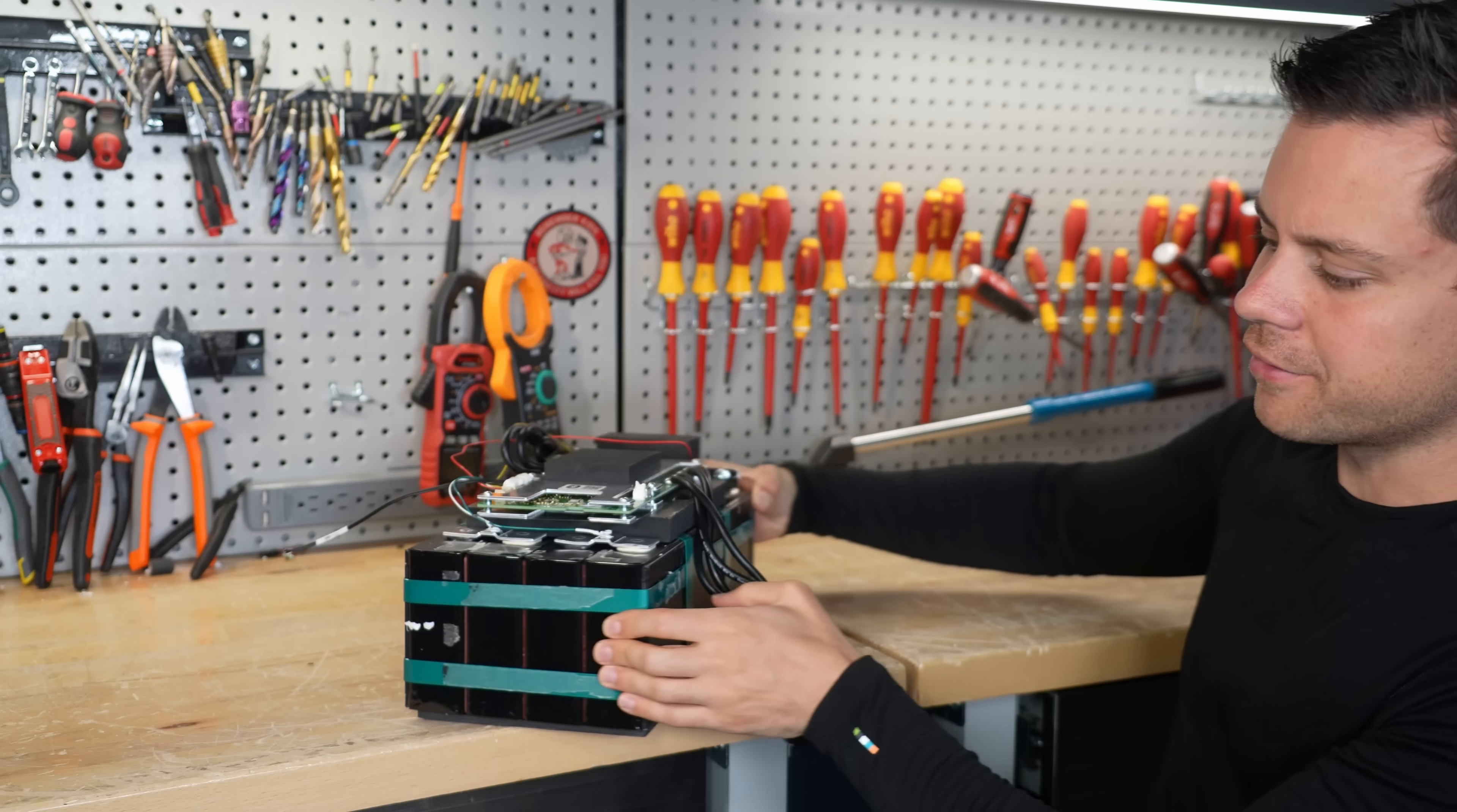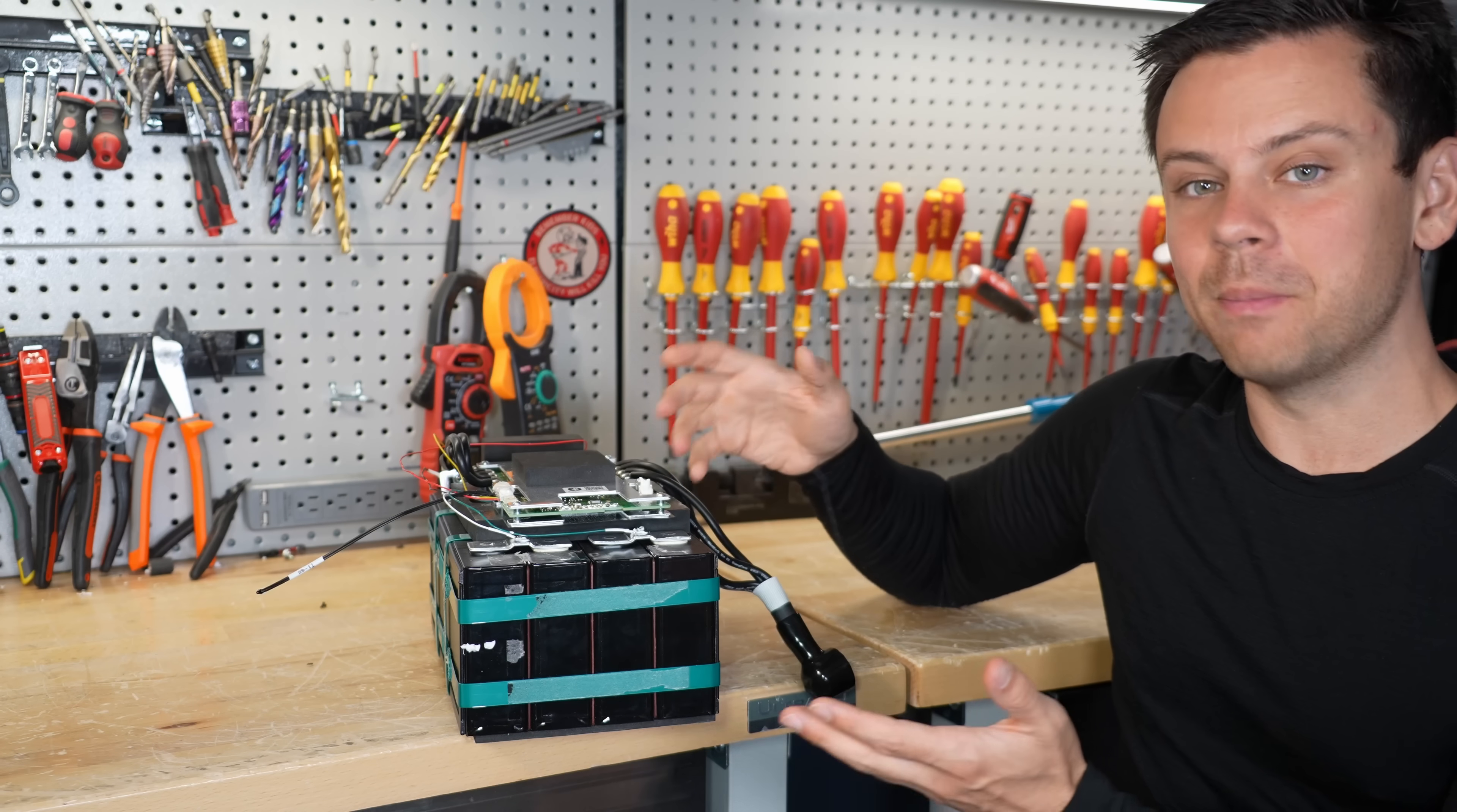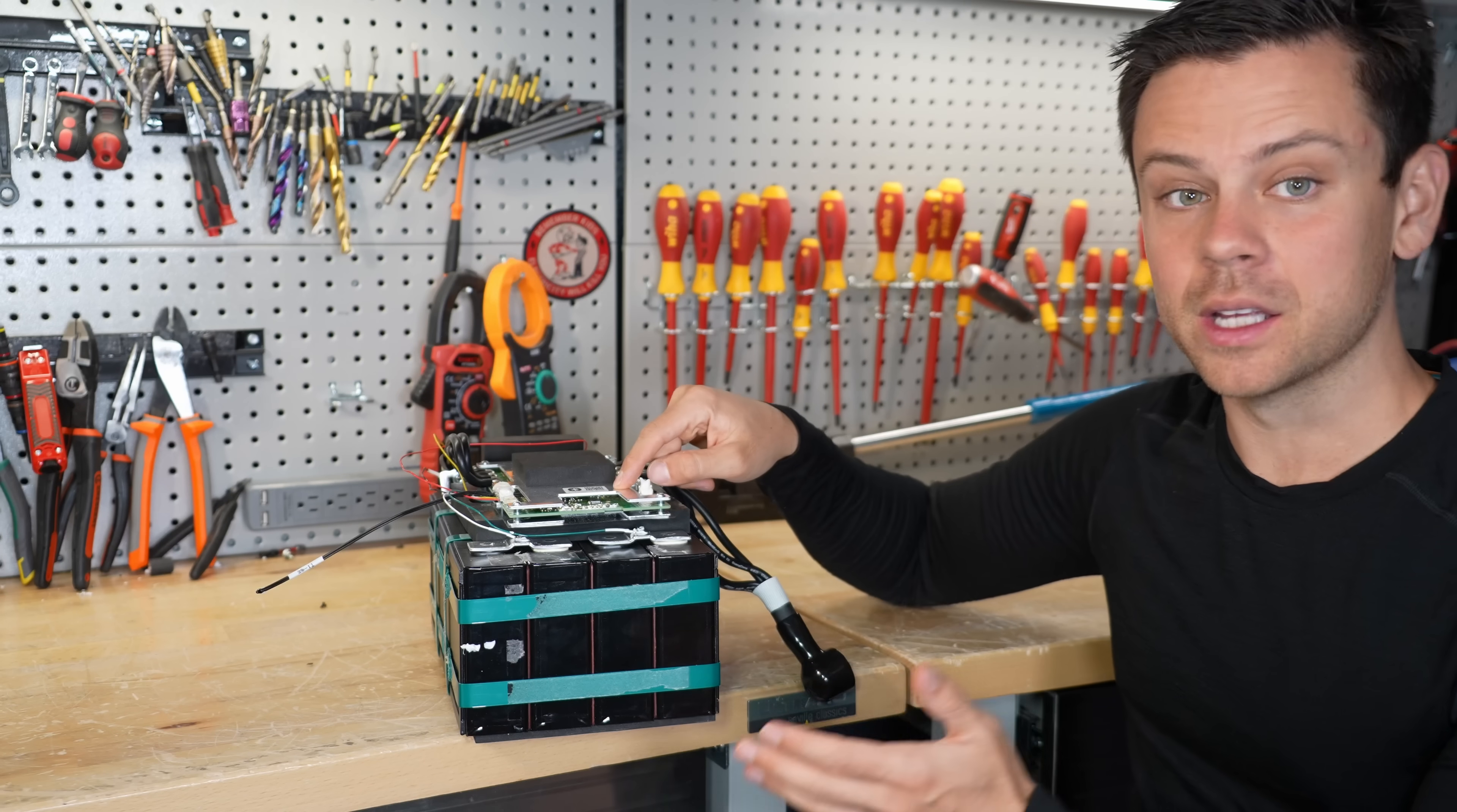So here's a lithium-ion phosphate battery. We have four cells connected in series. Now typically the BMS will manage charging, discharging, and everything else so that the cells stay happy. But let's say the BMS fails.